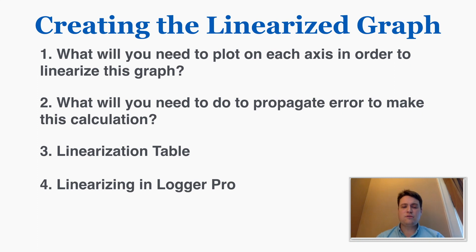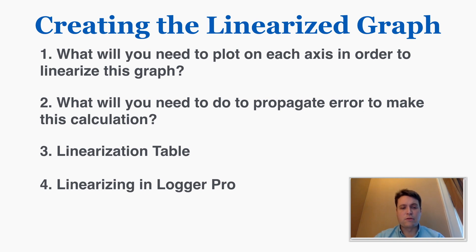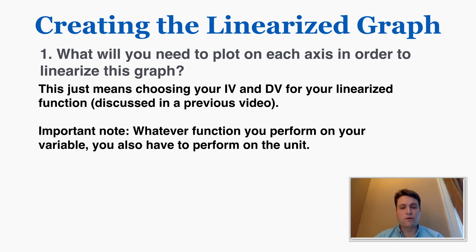Diving into step number one, this just means choosing your IV and DV for your linearized function, which I discussed in the previous video. As an important note, whatever function you perform on your variable you also have to perform on the unit of the variable. So if you're squaring time, and the unit time is measured in is seconds, the unit of your new squared axis is going to be seconds squared.